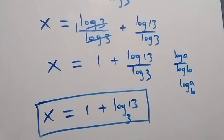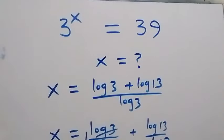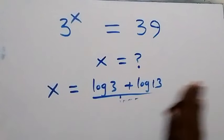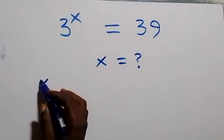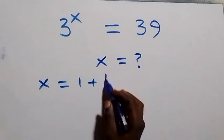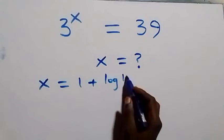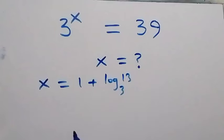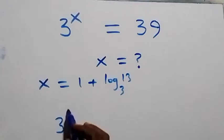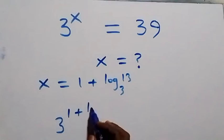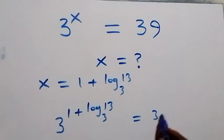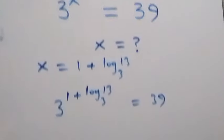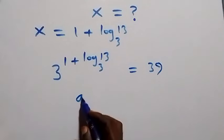We can check to verify if what we have satisfies the given problem. When we substitute the value of x, which is x equals to one plus log thirteen base three, this equation becomes three raised to the power of one plus log thirteen to base three, is equal to thirty-nine.